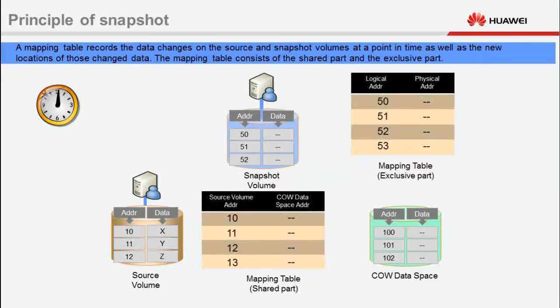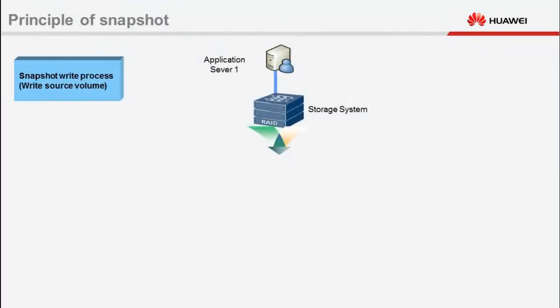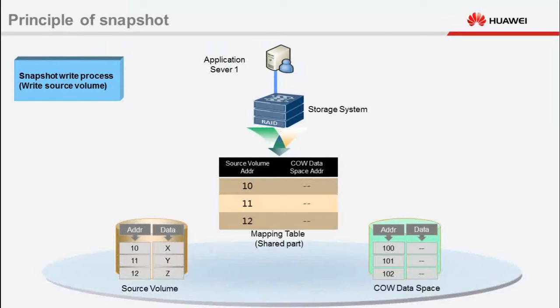Saved in the COW data space, the shared part records the mapping between the COW data and its location when data is written to the source volume. Saved in the snapshot volume, the exclusive part records the mapping between the data generated on the source volume and the location of such data on the snapshot volume. When a snapshot is activated, the storage system automatically creates a mapping table. Before new data is written to the source volume after the snapshot point in time, all address pointers in the mapping table point to the source volume and the COW data space is empty.